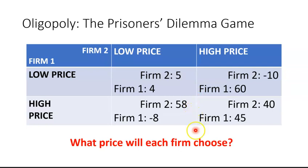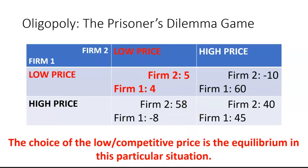Therefore, both firms are going to end up choosing the low price strategy, getting a combined profit of nine, where they could have both had much higher profits had they somehow been able to choose the high price strategy at the same time. You can see the parallel with the Golden Balls example, where there's a lot of incentive for each player to choose steal — they end up with a very poor outcome instead of splitting and both ending up much better off collectively.